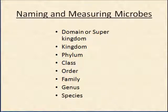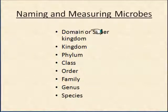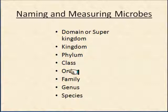At the end of our last presentation we had pointed out that we have the domain or super kingdom, the kingdom, phylum, class, order, family, genus, and species.